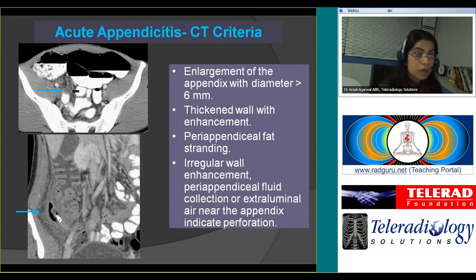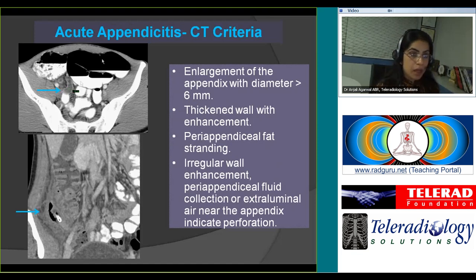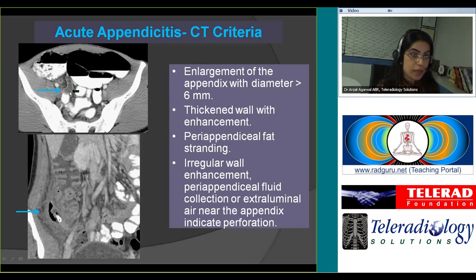Looking at case examples of acute appendicitis: this image demonstrates a fluid-filled thickened appendix. Based on CT criteria, if you see a fluid-filled appendix with a diameter greater than 6 millimeters, you can suggest the diagnosis of appendicitis. Notice there is good contrast opacification of the cecum, but the appendix is non-opacified, indicating increased intraluminal pressure and perhaps obstruction at the proximal aspect.